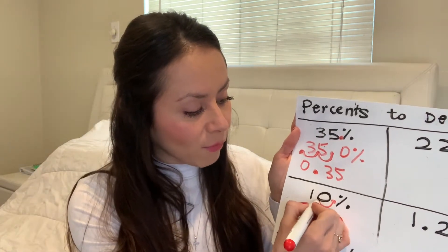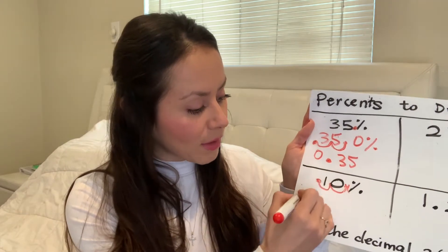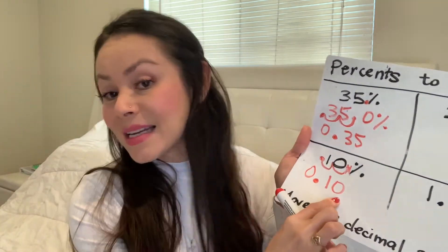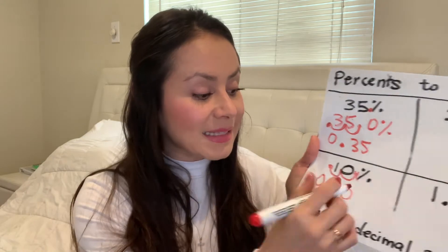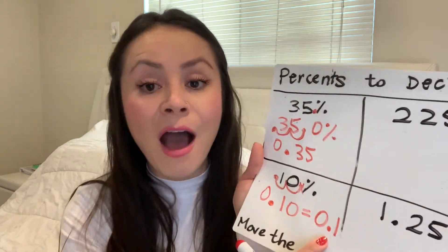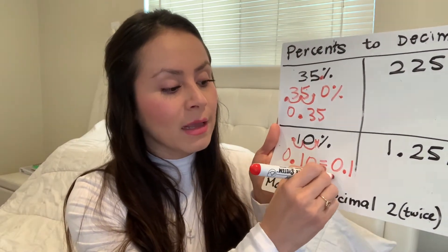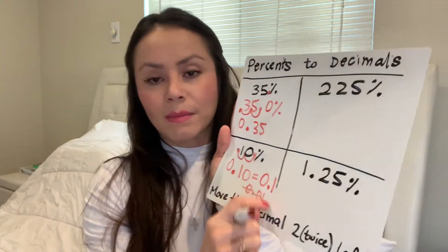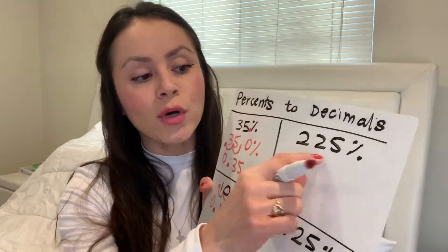Now let's go to 10%. Where's our invisible decimal? Yes, in the back. Move it twice to the left — one, two — the decimal is now in the front. It becomes 0.10, which is exactly the same as 0.1. That means 10 cents. 0.1 is not one cent, mi gente — there's an invisible zero at the back so it's 0.10. If you wanted it to be one cent, it's 0.01. But that's how you write one penny, one cent — not this one. My kids always used to get confused.